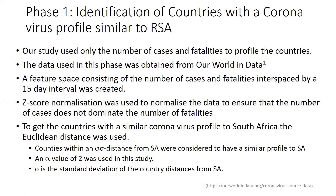In the first phase, we profiled the different countries using the number of cases and fatalities from coronavirus. The data came from Our World in Data. We first created a feature space using the number of cases and number of fatalities at 15-day intervals. We collected the number of new cases in the first 15 days from the first observed case, then the next 15 days (day 16 to day 30), continuing up to day 150, creating the feature space for profiling.